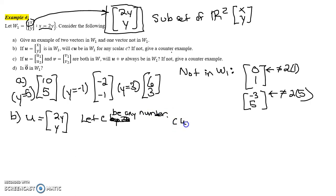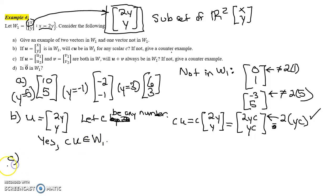Then c times u would be c times this vector [2y, y]. When you multiply a scalar times a vector, you just multiply each component by that scalar. And notice here that this first component is equal to 2 times the second component. So since it does have the form we need for all vectors in W₁, the answer to b is yes. c times any vector in W₁ will be a vector in W₁.